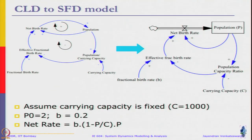The population is the only stock. Net birth rate connection is the same. Carrying capacity is a parameter, and then we define the population by capacity ratio and link it to effective birth rate, net birth rate, and fractional birth rate. We can assume that carrying capacity is fixed, let's say C equals 1000. Let's assume P naught or the initial value of population is 2, and small b is 0.2. These are all the constants.